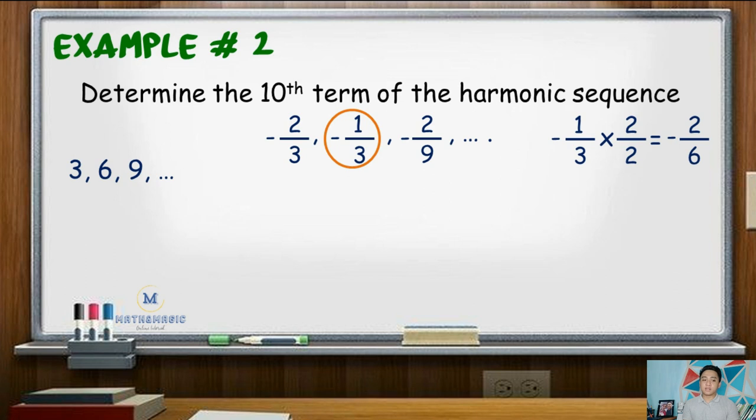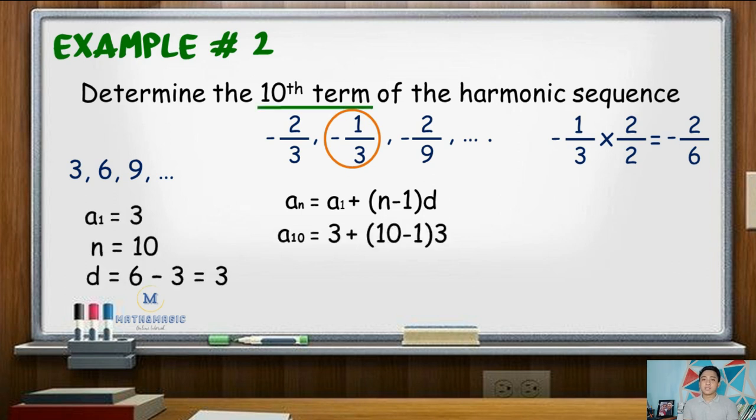Using the nth term formula, a sub n be equal to a sub 1 plus quantity n minus 1 times d, the 10th term will be equal to 3 plus quantity 10 minus 1 times 3. 10 minus 1 is 9, multiplied by 3, that is 27, plus 3 is 30. So the denominator for this sequence is positive 30.